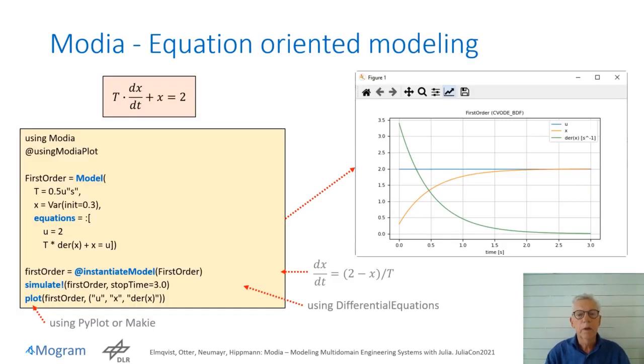The basis for modeling in MODEA is differential equations and algebraic equations. This is demonstrated by a first-order filter. Parameters can be defined with units, such as the time constant. Variables can have attributes such as initial conditions. Equations are given as an array of quoted expressions since symbolic manipulations will be done. In this case, the input is defined with an algebraic equation. A differential equation uses the DER operator to define the time derivative of variables. The Julia commands to simulate and plot are given below.